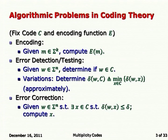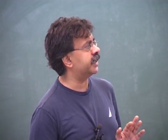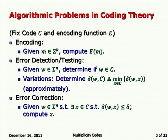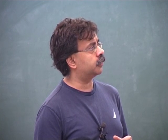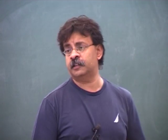Then there is the error correction question: given w which is promised to not be too far from the code — there exists x such that the distance between w and x is smaller than some constant delta — compute x. We consider settings where x is uniquely determined, because any two codewords are sufficiently far apart that you will not have two different elements x1 and x2 both satisfying this property. That is the choice of delta we will be working with today.